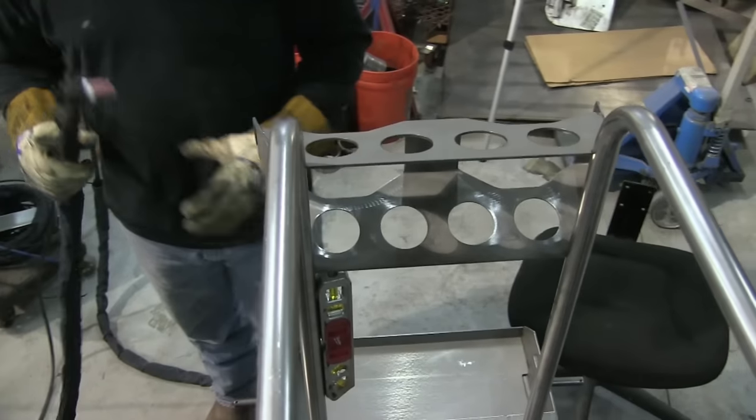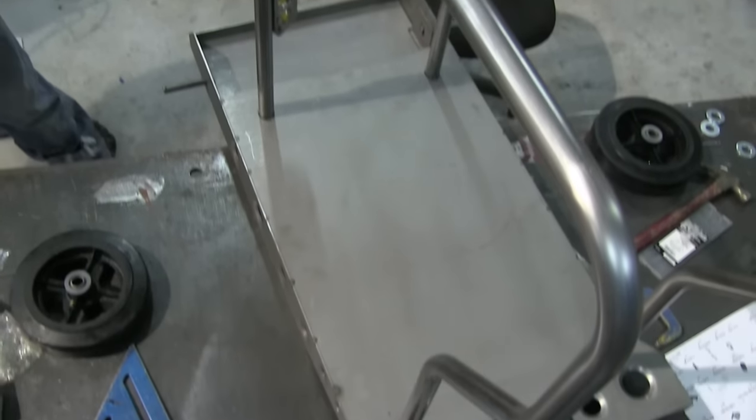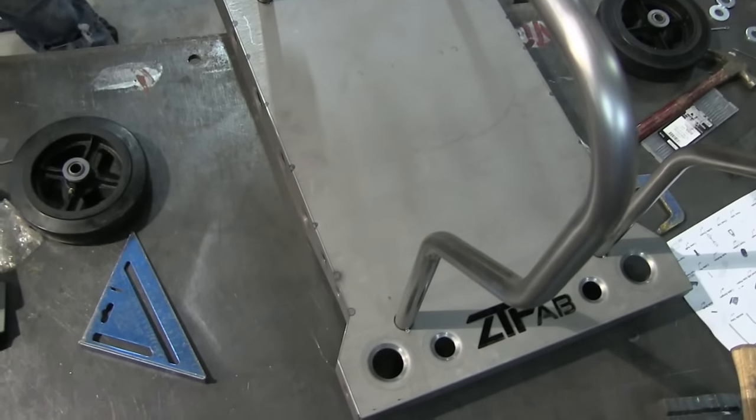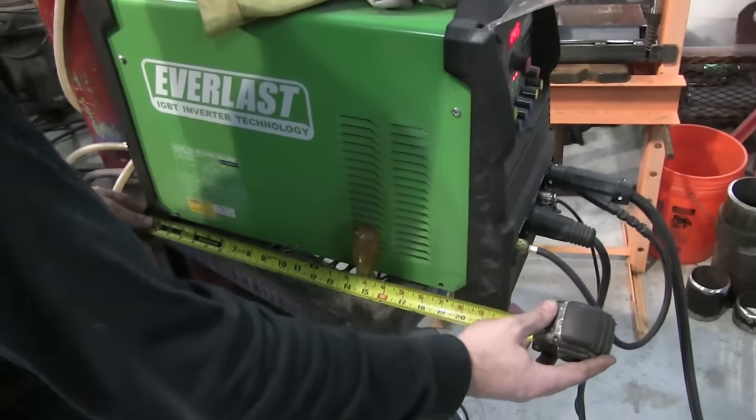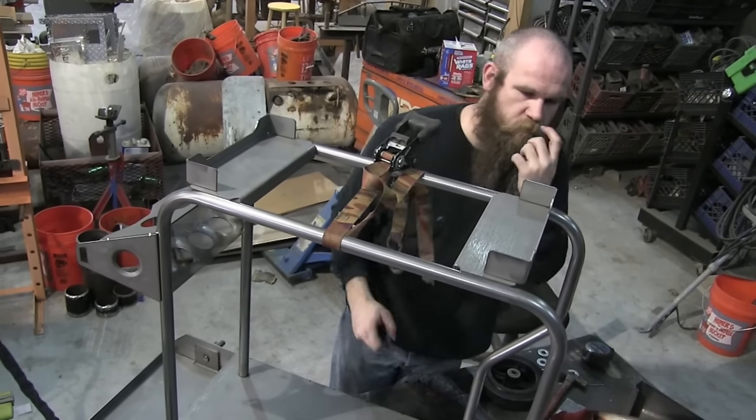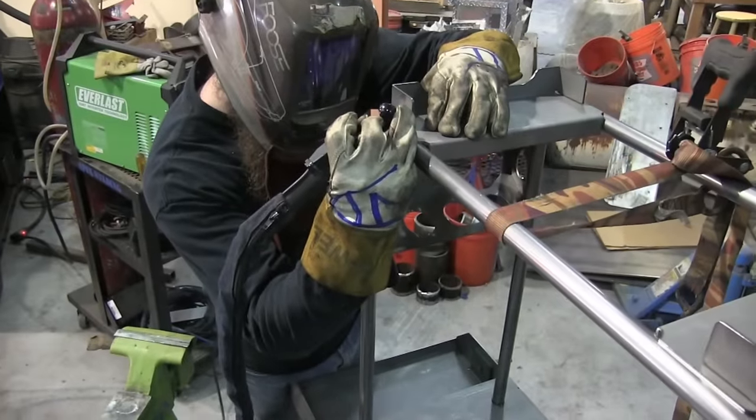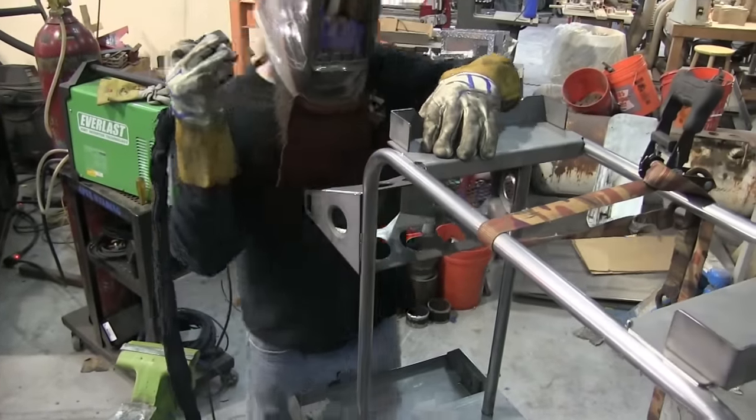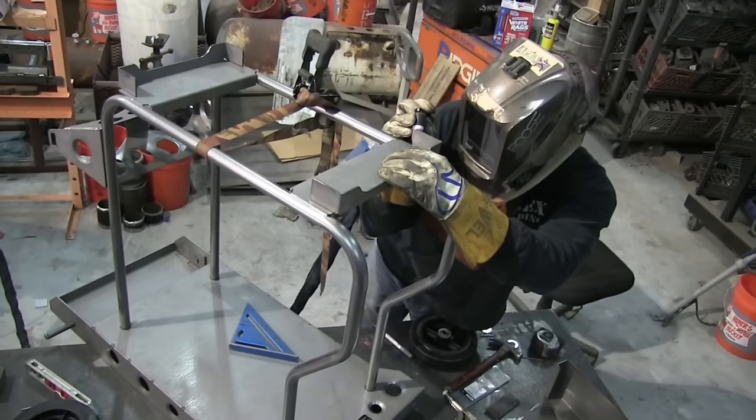Again, I usually set it at one and a half to two times what I would weld at any particular thickness. So quite hot, but you're getting off of it really quick. All right, a quick measurement of the machine so we can get the spread right. And then using a ratchet strap to hold everything together, getting the last few tacks on this thing. And then the basic cart will be pretty much all tacked up and rigid and ready to weld out.